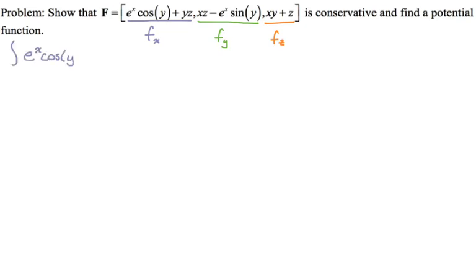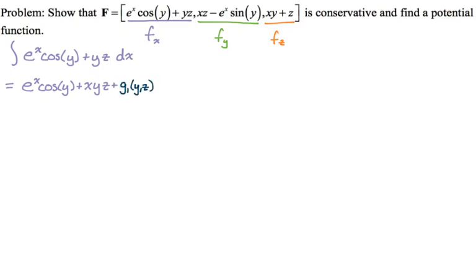We're going to integrate with respect to x, which is not that bad. Cosine of y is just a constant and the antiderivative of e to the x is e to the x, so I get e to the x cosine y. Then yz is a constant with no x, so it just becomes xyz. So we get e to the x cosine y plus xyz. If there had been any function of just y, just z, or of y and z, its derivative with respect to x would have been zero. So we have to add a constant that is some function of y and z.